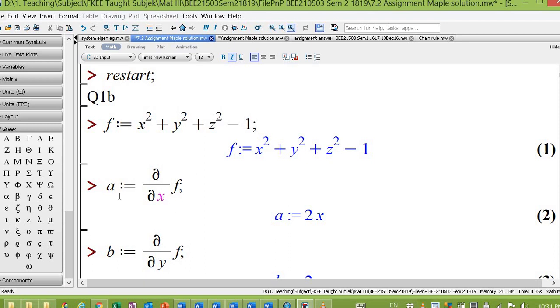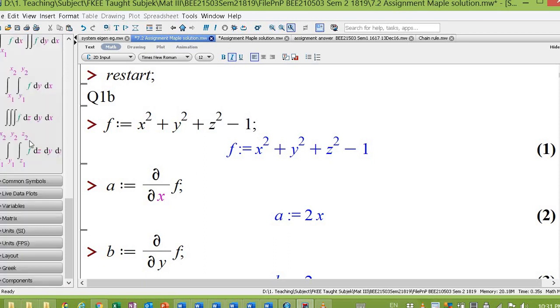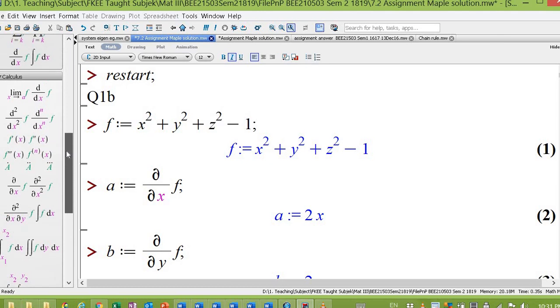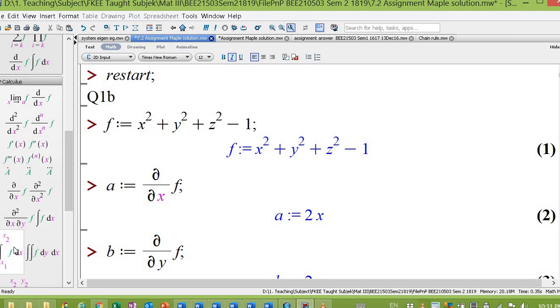So to get ∂f/∂x, this is under calculus. Find the first partial derivative, we use this button. Then I assign it into variable a. So you have a = 2x.